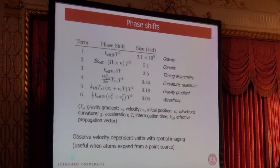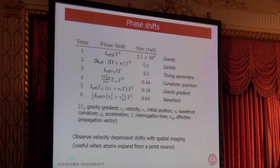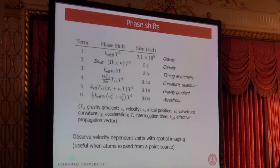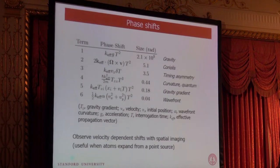The dominant phase shift accrues almost 200 million radians worth of phase due to the acceleration due to gravity as the wave packets separate and recombine. This is running an interferometer with a standard two-photon recoil atom optic driven by a stimulated Raman transition. There are other interesting phase shifts which are surprisingly large: one is a five-radian phase shift due to the Coriolis effect, from the atom cloud's velocity spread even at nano-Kelvin temperatures, which couples to the rotation of the Earth and writes a multi-radian phase shift across the cloud.